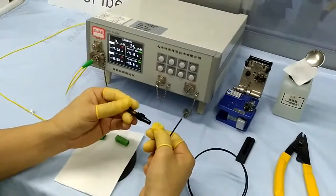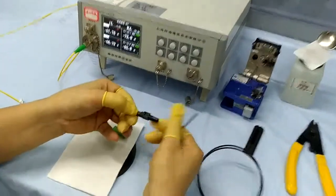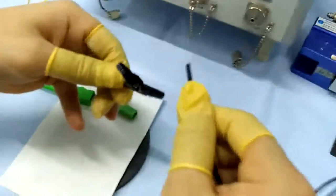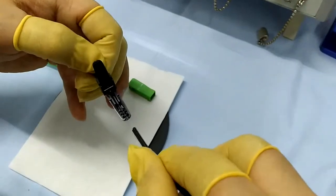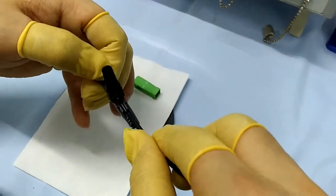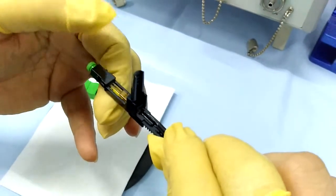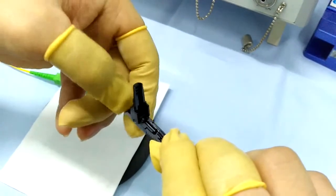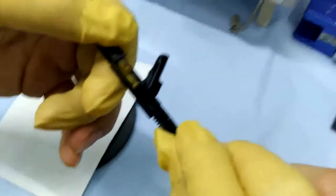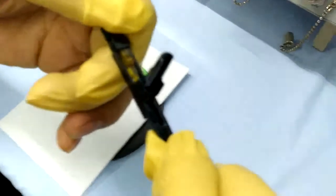Insert the cable carefully into the ruggedized connector until the fiber meets the embedded fiber end. Make sure the fiber is bending like it shows.